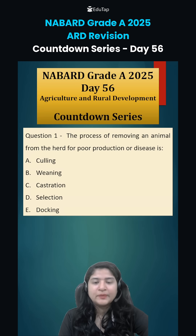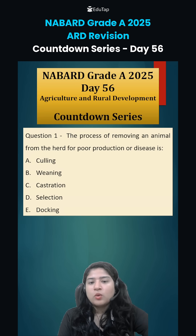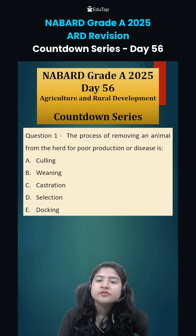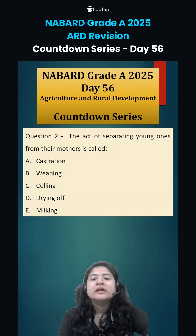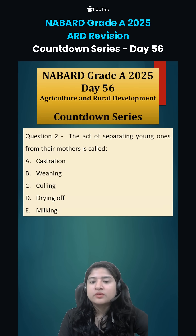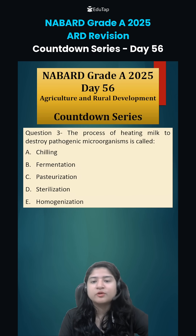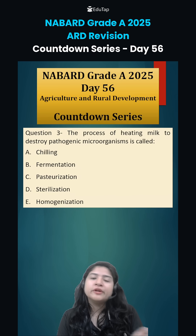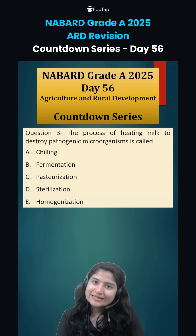Option number D is the correct answer. Now coming to today's questions: question number one is the process of removing an animal from the herd for poor production or disease is known as what? Second, the act of separating young ones from their mother is called what? And third, the process of heating milk to destroy pathogenic microorganisms is known as what? Comment your answers and we will discuss in the next class. Thank you.